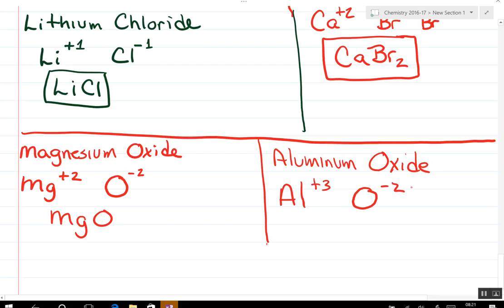There's a couple ways you can do this. If we multiply these two together, what's the lowest number we're going to get? Six. So how many aluminums do I need to get six? Another one. How many oxygens do I need to get a total of six negatives? Two more. So now I have Al2O3.